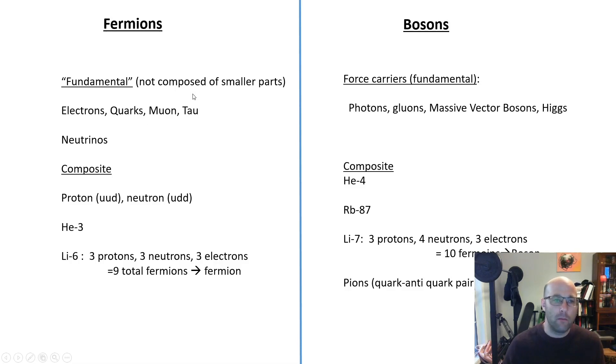Let's look at some examples. Within the standard model, all the matter particles are fermions. So all the leptons—electrons, muons, and taus—all the quarks, there's too many to list, all the neutrinos, again one neutrino for each of the leptons, those are all spin one-half fermions. Within the standard model, force carriers are all bosons.